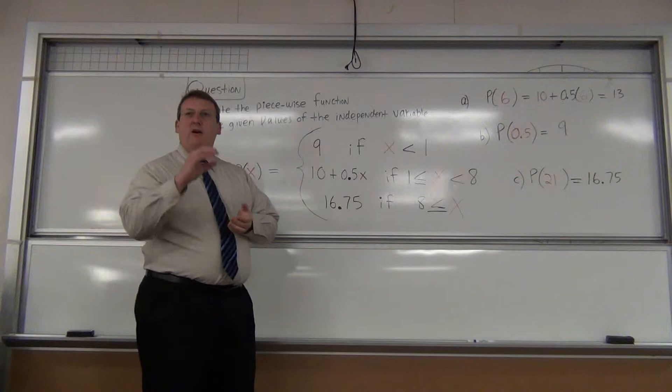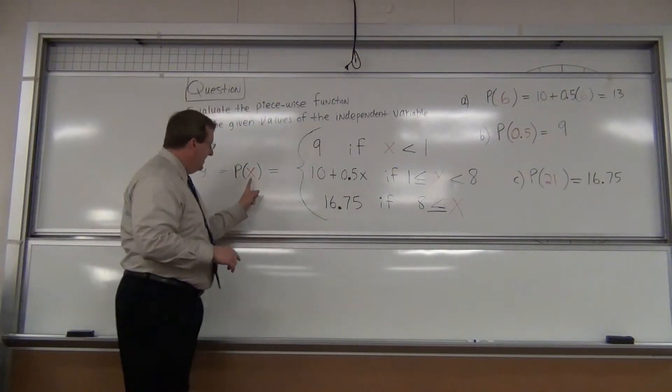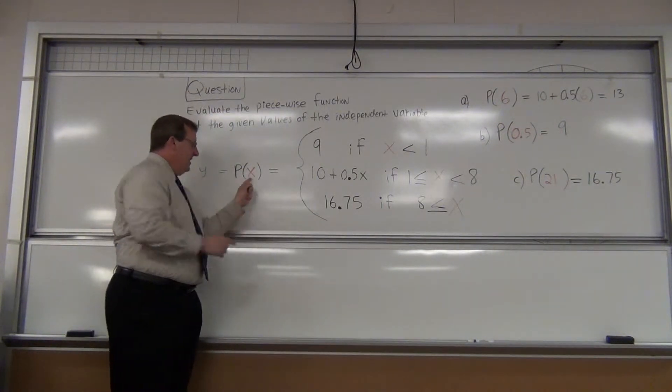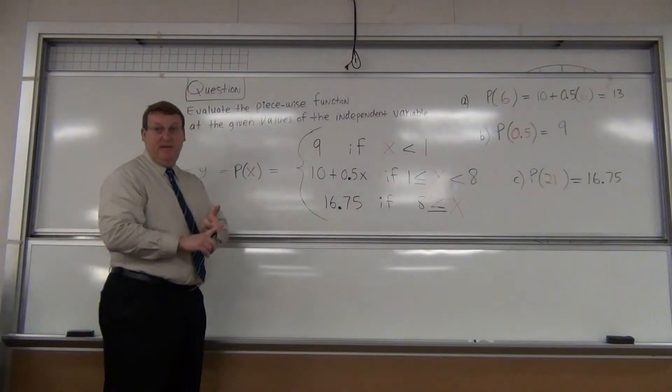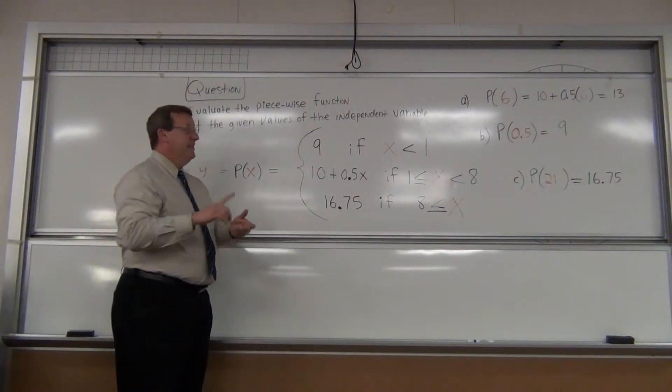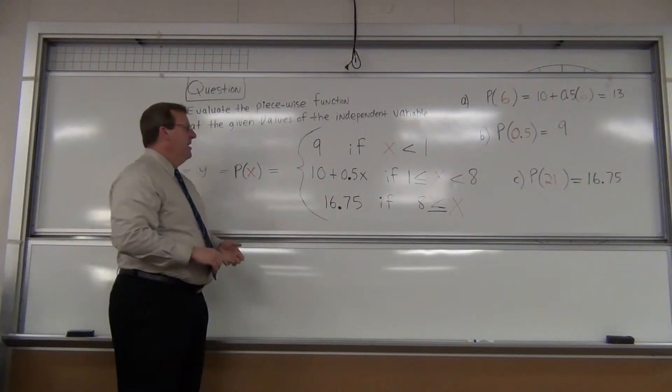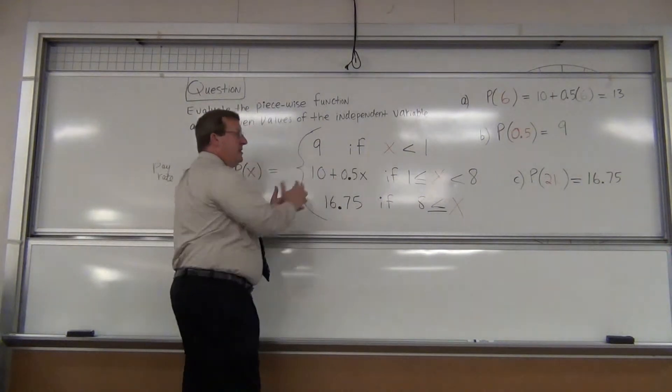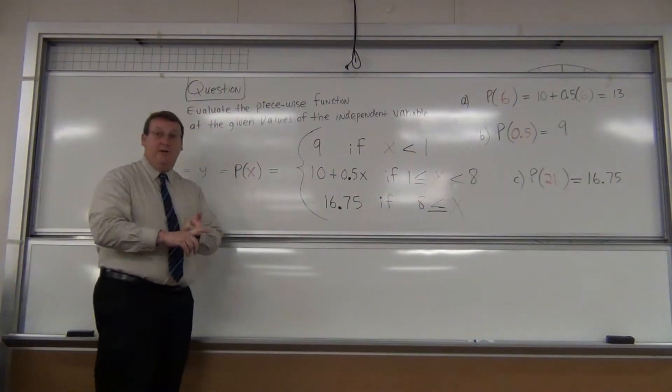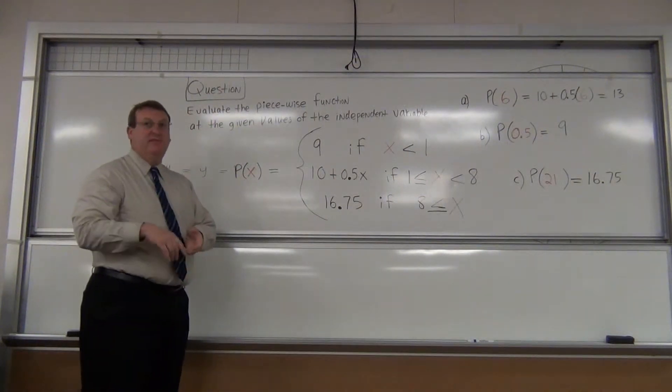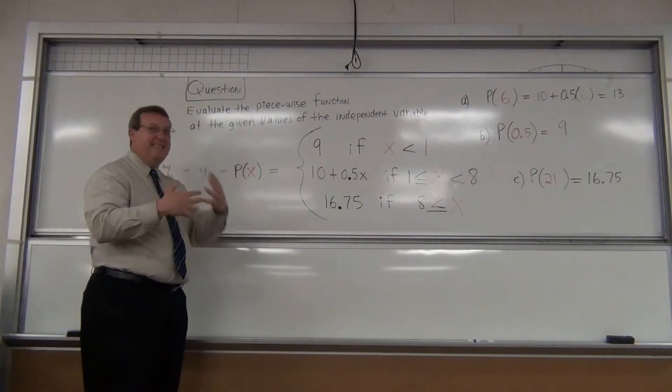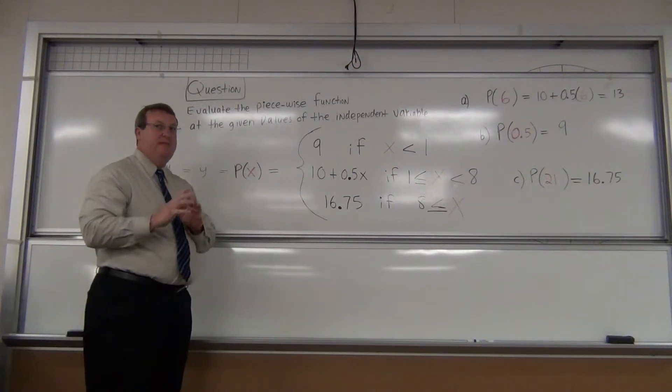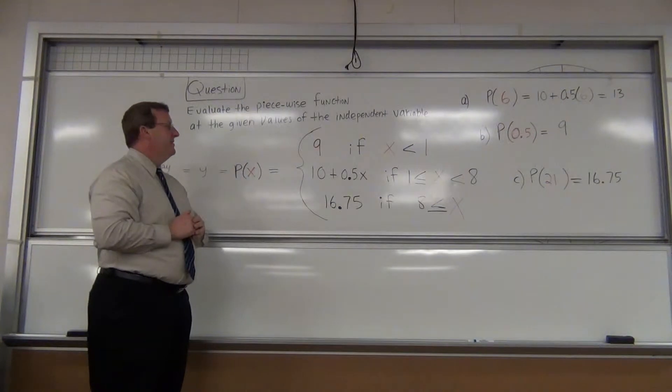It says for different values of the independent variable. Let me remind you, when you see the letter X that's inside the parentheses, that input will be called an independent variable. The value you get out will be called your Y value, the output, also known as a range. There's lots of names that can get you a little scared, but don't be scared.